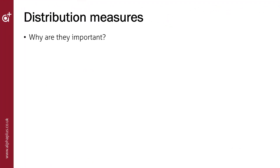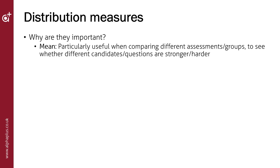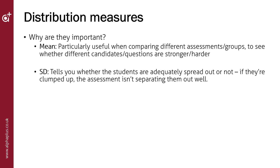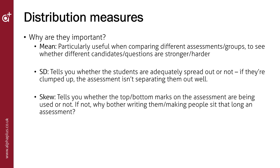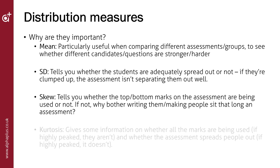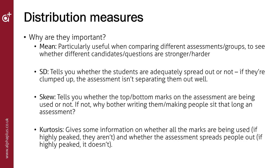So why are these measures of assessment performance important? The mean is particularly useful when comparing different assessments or groups of students to see whether different questions are easier or harder, or different groups more or less able. The standard deviation tells you whether students are adequately spread out — if clumped, the assessment isn't separating them well and can lead to reliability problems; higher standard deviations are better. The skew tells you whether the top or bottom marks are being used — if not, you need to think about making the assessment harder or easier so all marks are used. Kurtosis indicates whether all the marks are being used; if highly peaked, marks aren't being used and the assessment isn't spreading people out. All of these basic statistical measures can be used to evaluate assessment performance and help improve the design for future assessments.